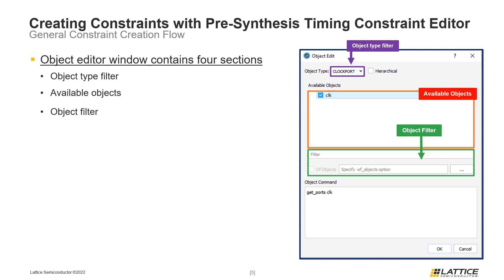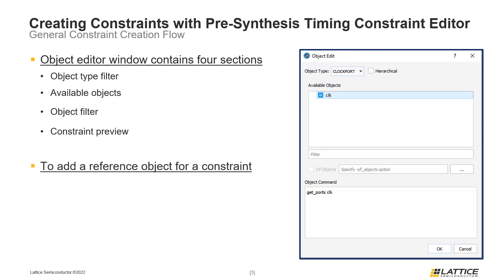Below the available objects area is the object filter, which can be used to filter for specific objects inside the available objects area. At the bottom of the object editor window is the constraint preview area, where a preview of the constraint being created will appear. One important thing to remember is that the object type filter selection also controls the constraint being generated. In the example on the slide, the get_ports constraint is being generated for the clock port object type. If the object type were something else, like clock nets, the constraint would instead be get_nets.